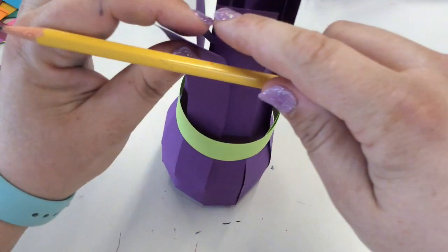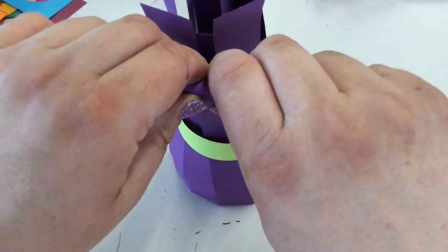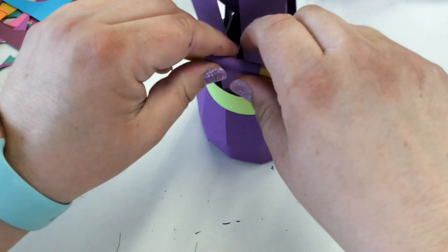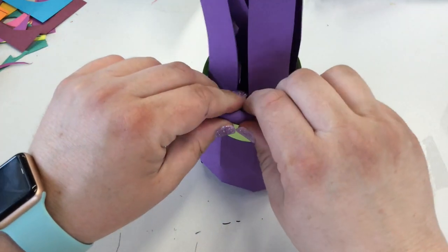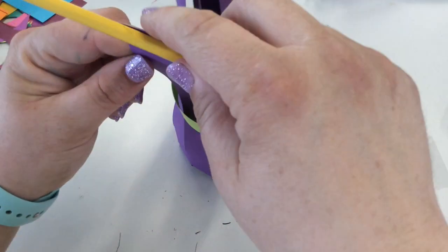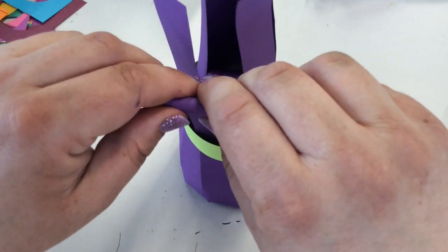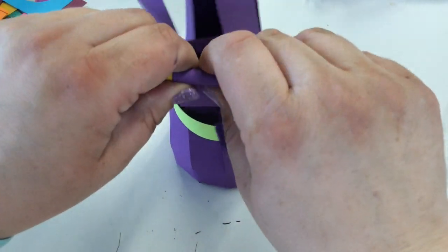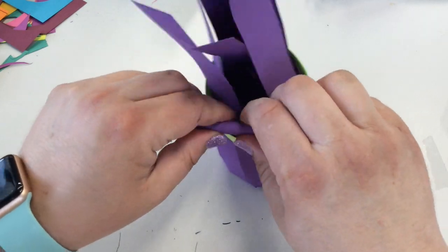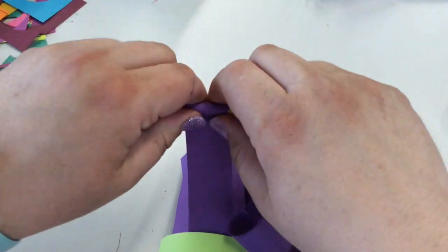Using a pencil or something similar, take the top of one of your strips and roll it until you get to your colored strip, and repeat this on all of those long pieces to create the fold over or the roll over on your vase.